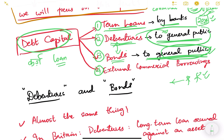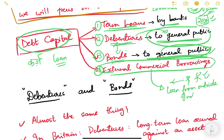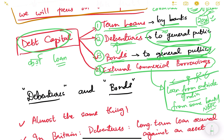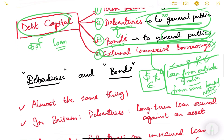The fourth type is external commercial borrowings (ECBs). This means taking a loan from outside India — from a bank or NBFC abroad. These loans are denominated in foreign currency, for example dollar loans, pound loans, or euro loans — not in rupees. That is known as external commercial borrowings.